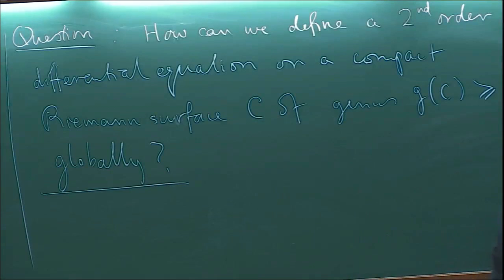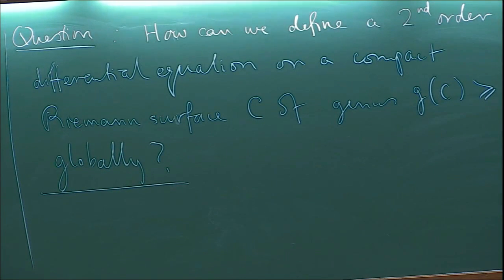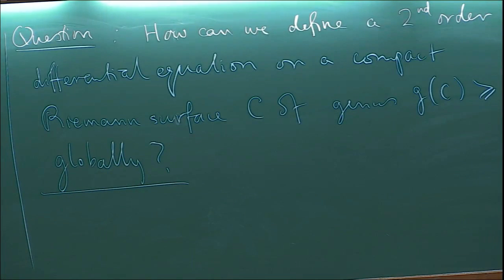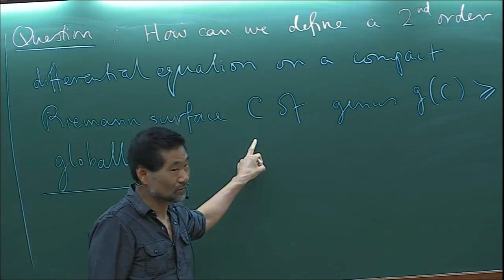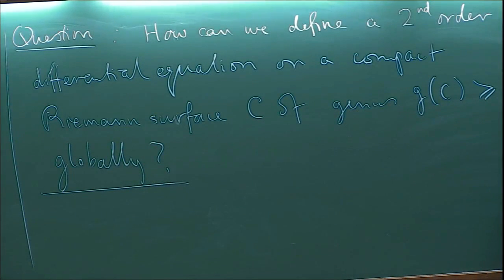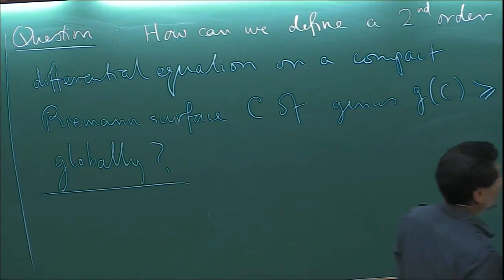Why is such a question difficult? A second-order differential equation, for example using parameter u: d/du squared minus a function, applied to a function — this is an equation. But this does not make any sense if you try to put it on a compact Riemann surface. Genus 0, no problem. But for higher genus, what this should be and how it transforms with respect to coordinates makes the situation difficult.